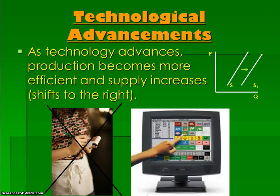T stands for technology or technological advances. As technology advances, production becomes more efficient and supply increases or shifts to the right. For example, if a restaurant gets a new computer system so waitresses don't have to write orders on paper, things become more efficient: waitresses no longer calculate totals and tax by hand, and if a slip of paper is lost, the record is still in the computer. Things move a lot faster when the system is computerized, so the supply of meals at the restaurant shifts to the right.